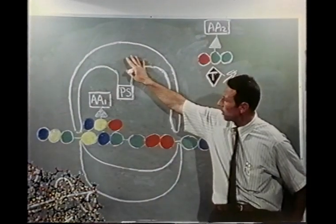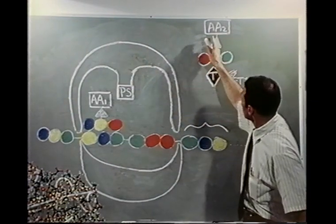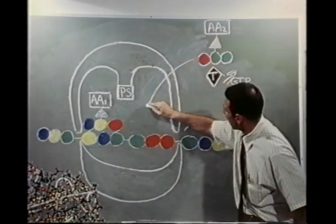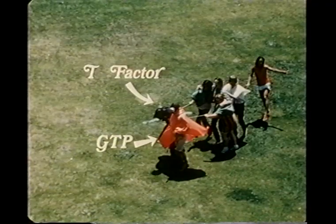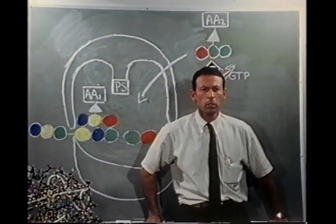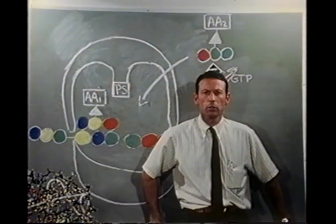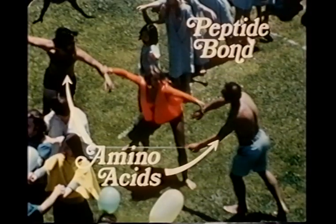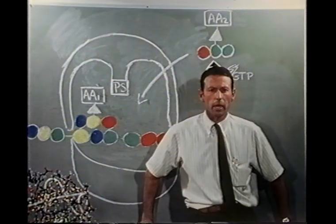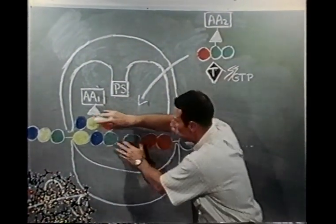Next, the large ribosomal subunit tumbles into place. The process of bringing each amino acid to the ribosome-message complex is accomplished by the T-factor and its GTP cohort. In the order prescribed by the balloon colors in the message chain, each amino acid is brought to the assembly site to be added to the growing chain by the peptidyl synthetase.